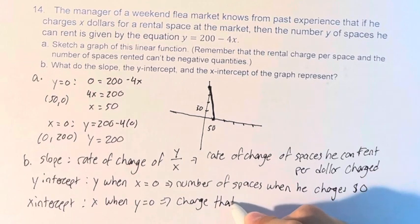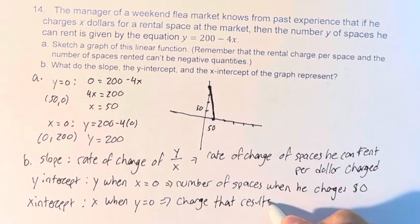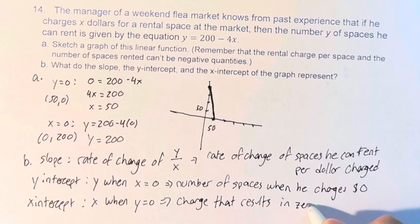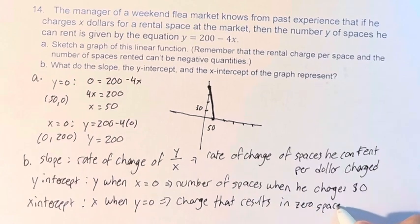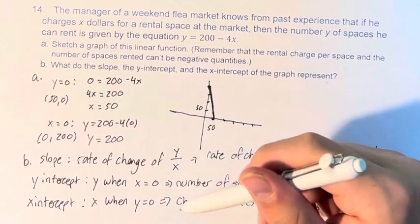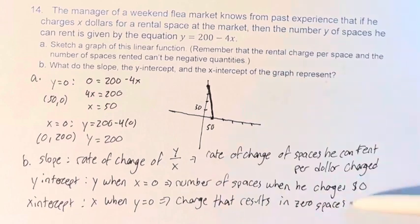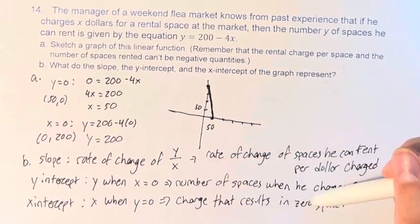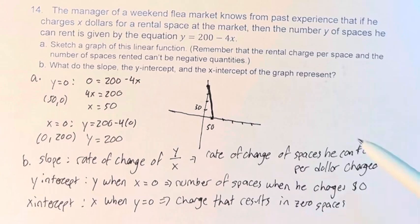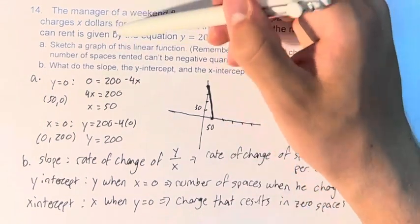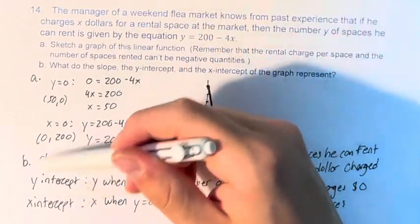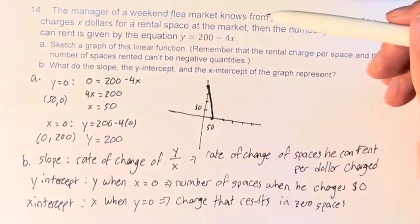So it is the charge that results in 0 spaces. Because it's the charge that actually results in the number of spaces, we have to write it like this. Versus the number of spaces that happen when you charge 0. Slightly different wording, but these are the actual applications of these concepts of this graph for this particular problem.